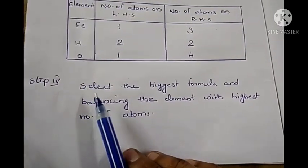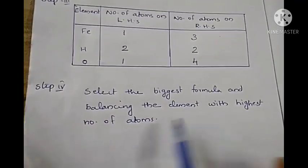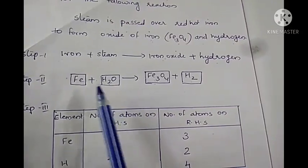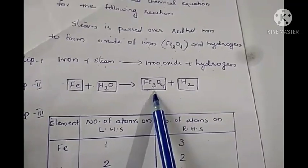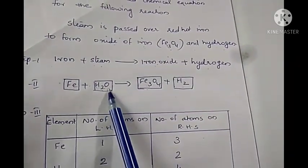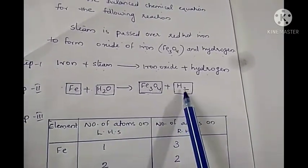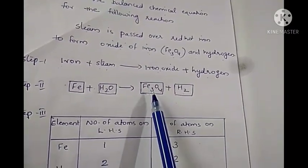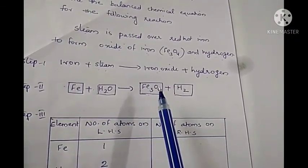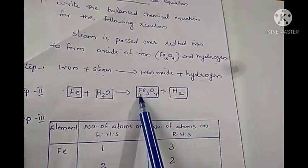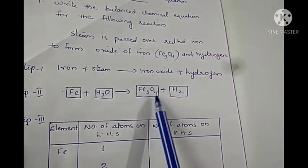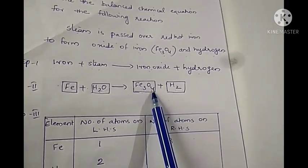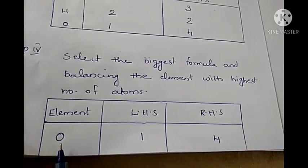Step 4: We have to select the biggest formula and balance the element with the highest number of atoms. Fe3O4 is the biggest formula — it contains 3+4=7 atoms. Within it, oxygen has more atoms (4), so we balance oxygen first. On the left hand side there is only 1 oxygen atom and on the right hand side there are 4. To make them equal, we multiply the left hand side reactant containing oxygen — which is H2O — by 4. So 1×4=4 oxygen atoms on the left hand side, equal to 4 on the right.